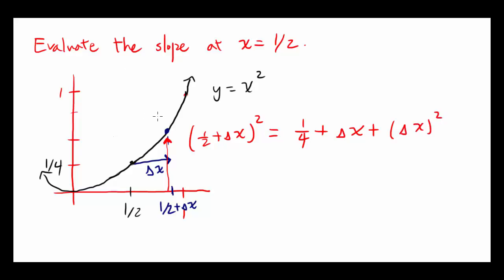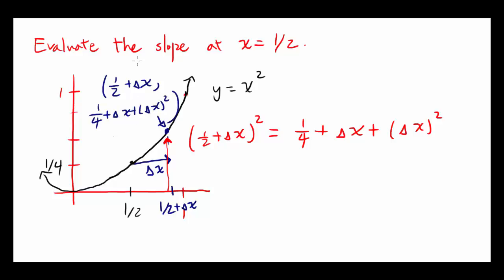So that's going to be the y coordinate of this point. The x coordinate is 1 half plus delta x, and the y coordinate is 1 fourth plus delta x plus delta x squared.